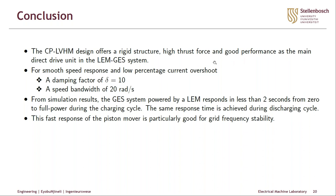In conclusion, the consequent pole linear vernier hybrid machine design has a rigid structure, high thrust force, and good performance as the main drive unit in a linear electric machine gravity energy storage system. For a small speed response and low percentage current overshoot, the system was tuned with a damping factor of 10 and a speed bandwidth of 20 radians per second. From the simulations, the system is able to respond in less than two seconds from zero to full power charging, and the same response is achieved during the discharging cycle. This fast response is particularly important for frequency stability, which is one of the key criteria for primary response.